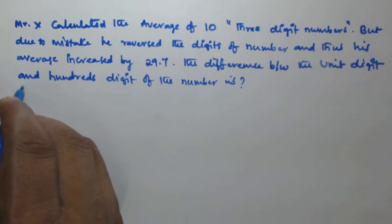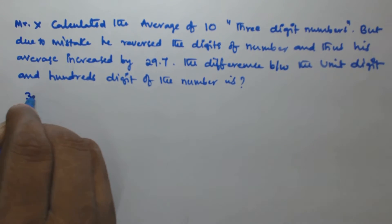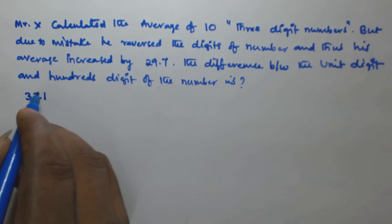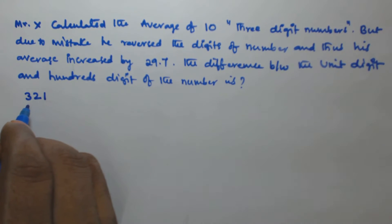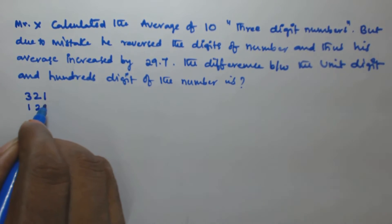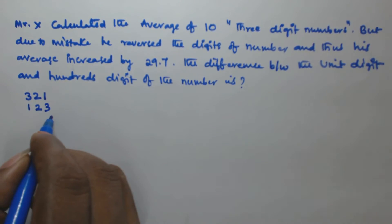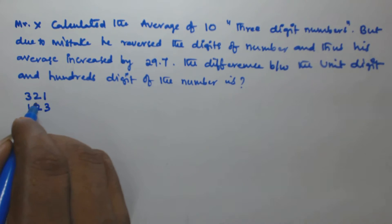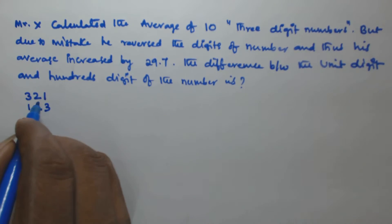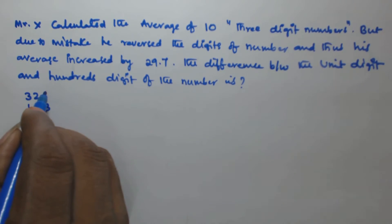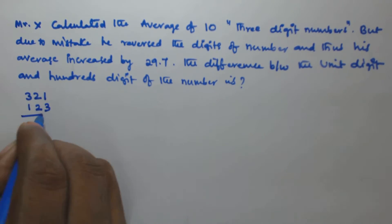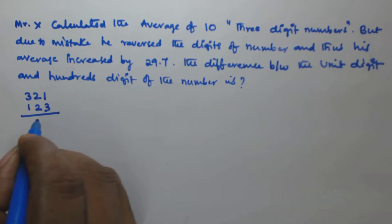Let us assume the given three-digit number is 321. If the digits are reversed, it becomes 123. If you observe, the middle digit is not changing — only the first and the third digit are changing.